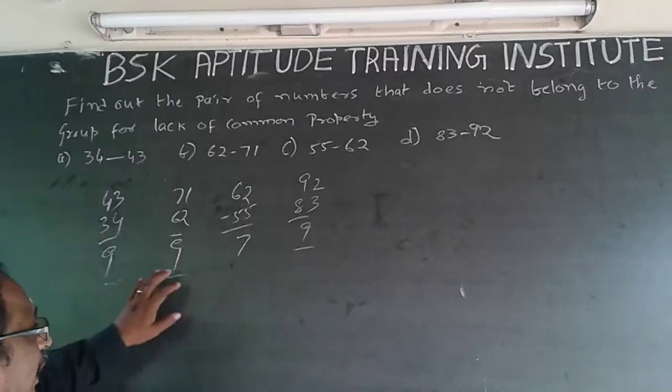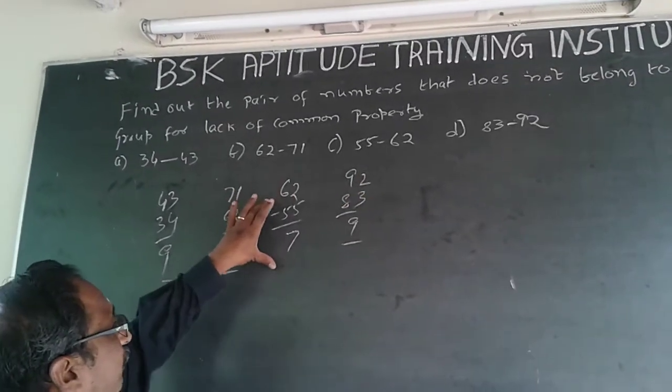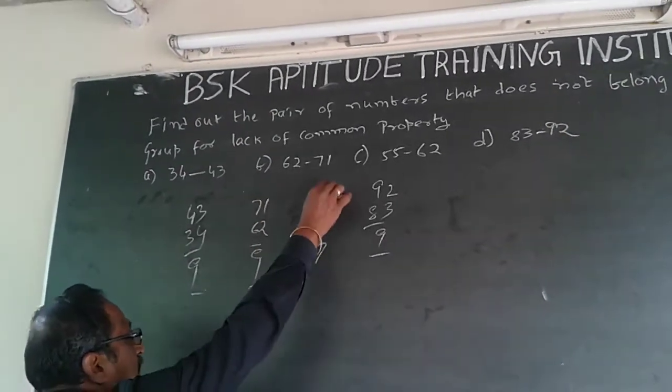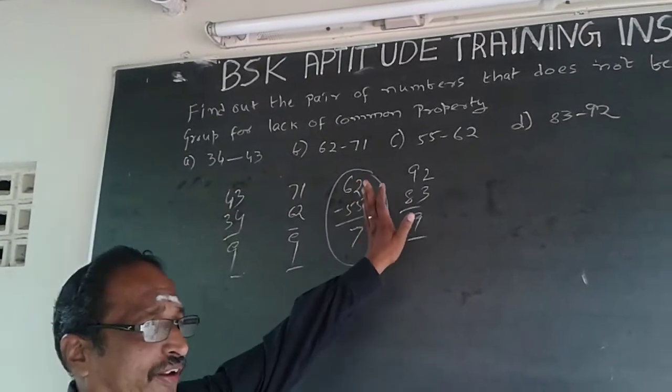So, 9, 9, 9. The difference is 9 in all the three numbers. Except C, where the difference is 7. So, that does not belong to the group is 62, 55. The answer is 62, 55.